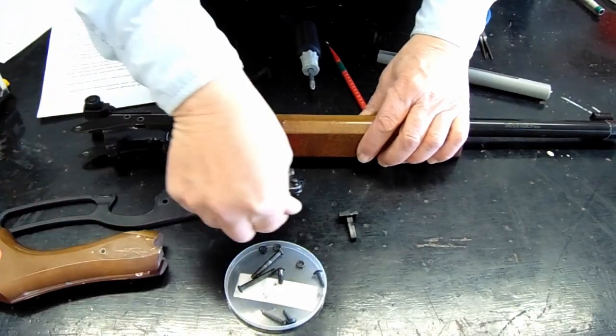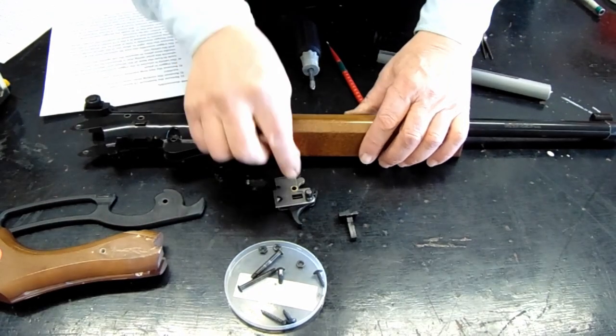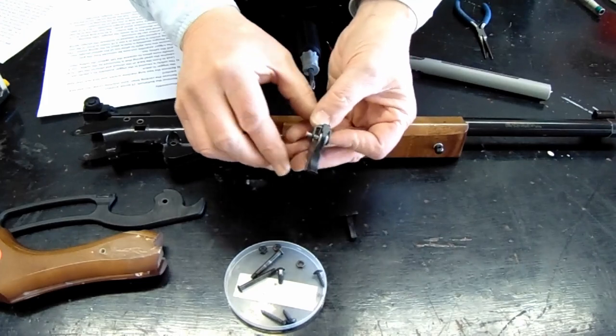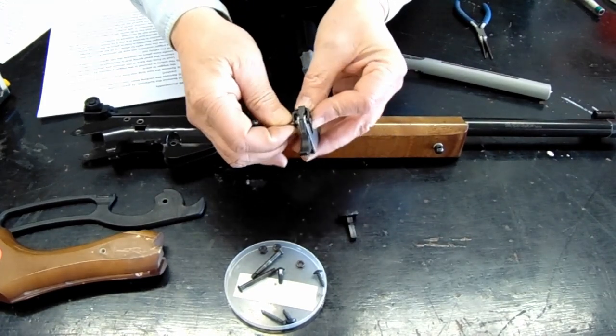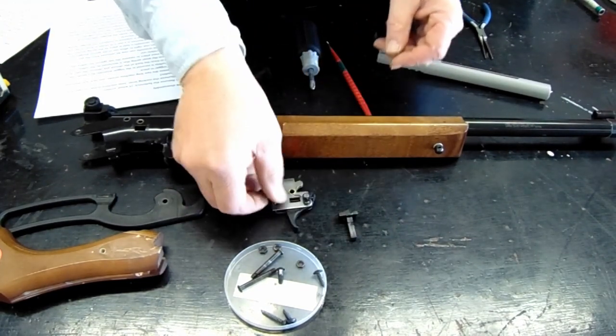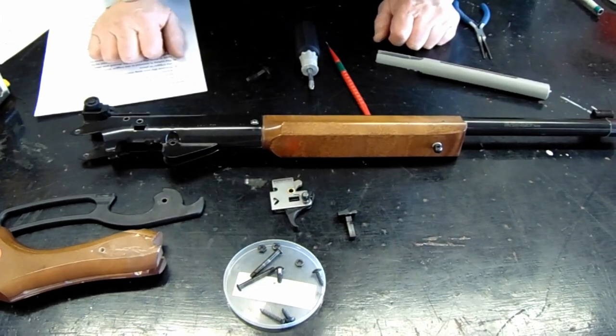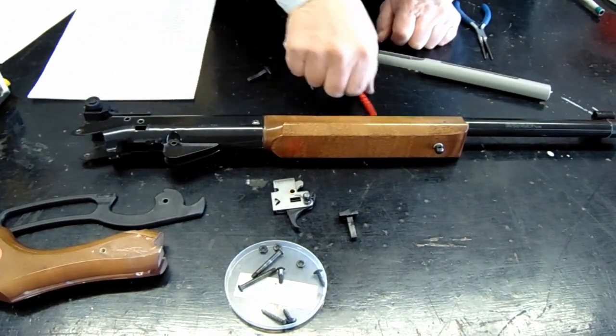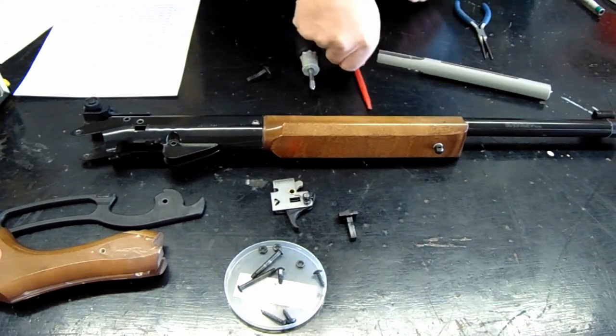Now the trigger can be removed. Note that there's a pin through the trigger housing. This little side has a shoulder on it. Life will be better if you keep that pointed up. Now we're ready to remove the plunger tube.